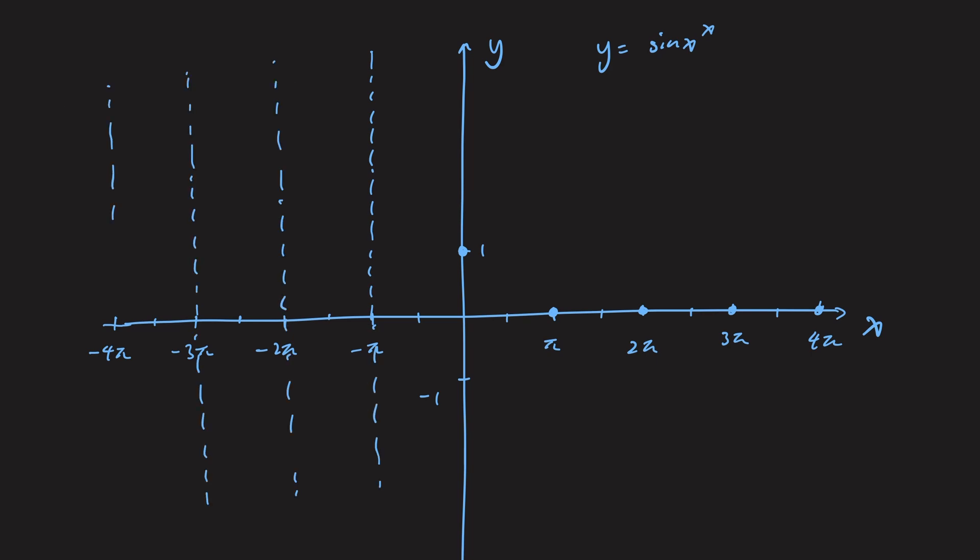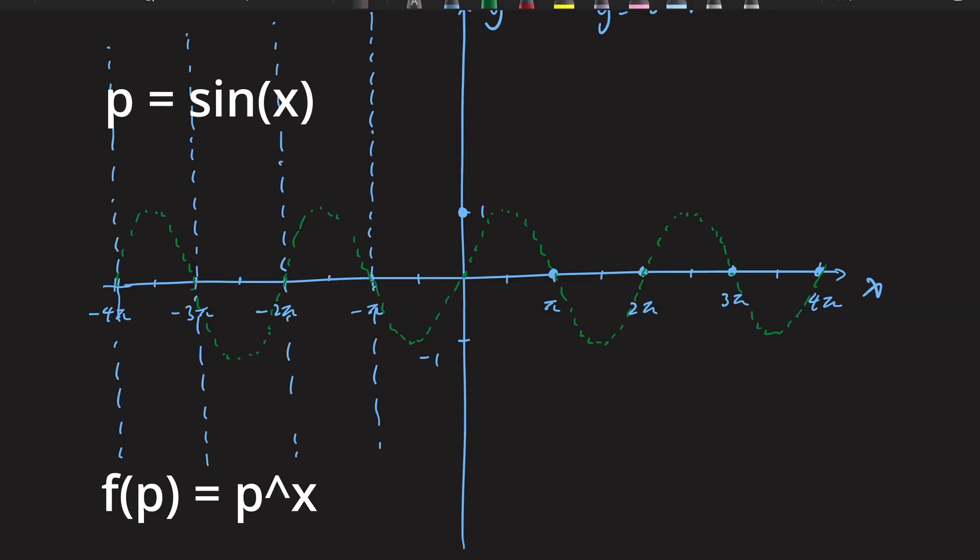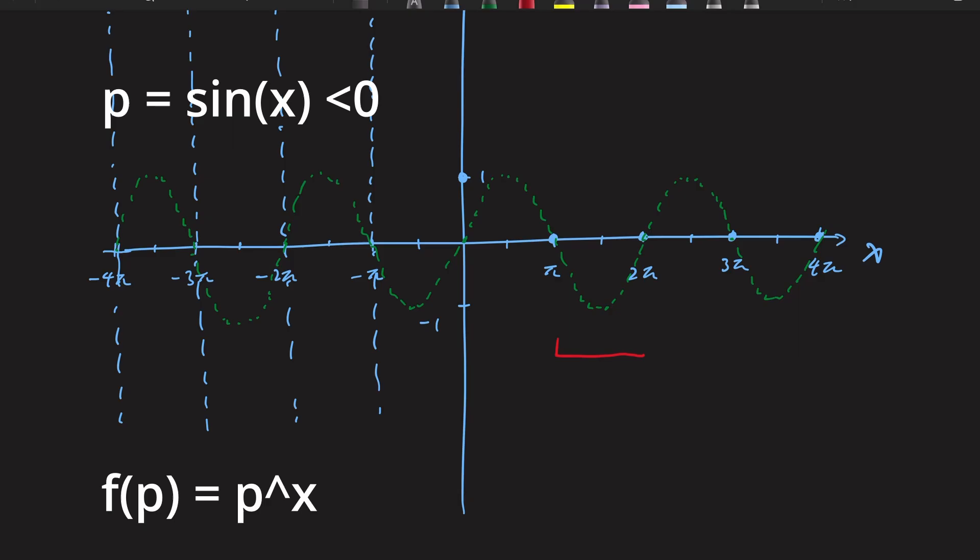Now, step 2. Consider the input sin x to f(p) equals p to the power of x. We see that the input is negative for p between pi and 2 pi. So the function should be undefined in those regions as the domain for exponential function is strictly positive.